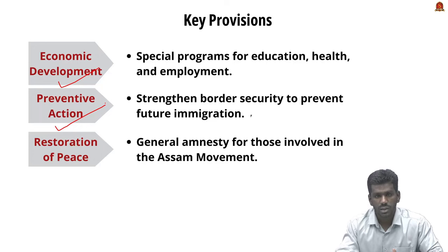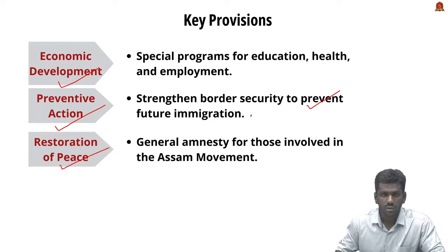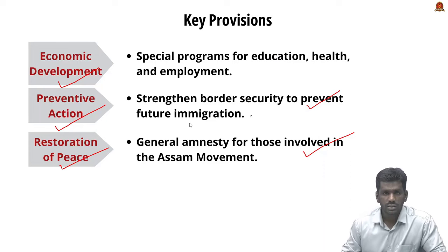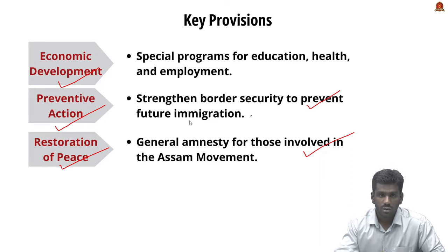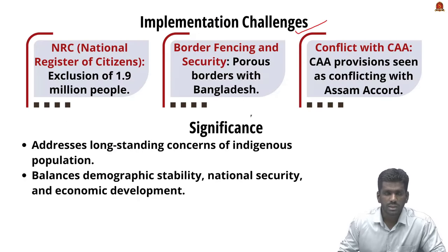Additional provisions include: prevention of future immigration — the government set up mechanisms to prevent further illegal immigration by strengthening border security and erecting physical barriers such as border fences. Restoration of peace and normalcy — the Assam Accord promised a general amnesty for all involved in the Assam movement to restore peace and normalcy in the state, reducing violent activities.